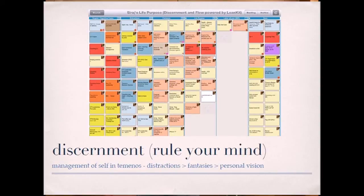My own personal training of discernment is to be able to rule my mind. One of the great statistics I learned very young is that our brain has 70,000 thoughts a day. My attempt is to rule my mind by creating as much space as possible for vision-oriented thoughts, and just notice distractions and keep them aside, notice fantasies and keep them aside. We want to activate our discernment ability.